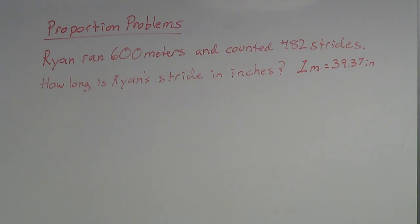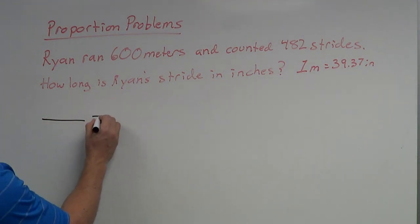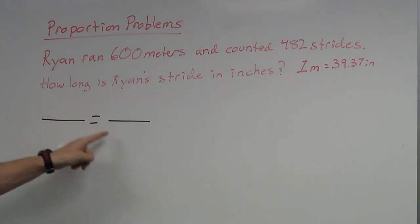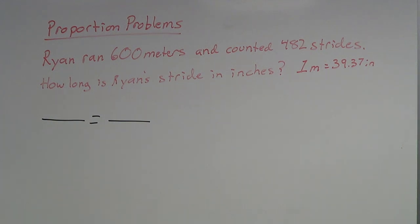Reading through the problem: Ryan ran 600 meters and counted 482 strides. How long is Ryan's stride in inches? The first thing we want to do is set up our proportion — a fraction equal to a fraction. In this proportion I have four empty spots, and I'm going to fill exactly three of them. I have to find three different numbers from this problem.